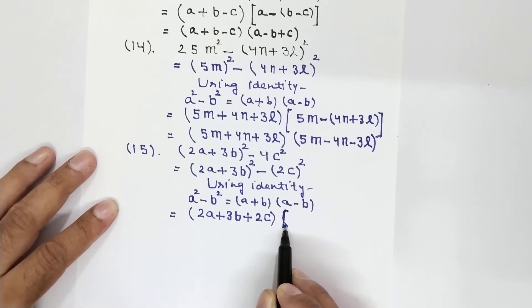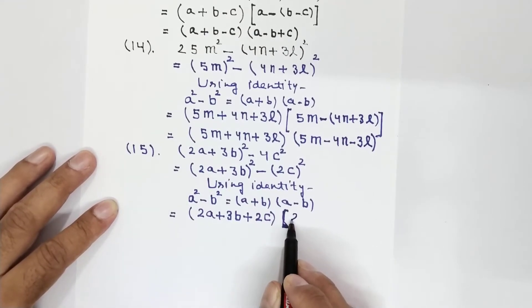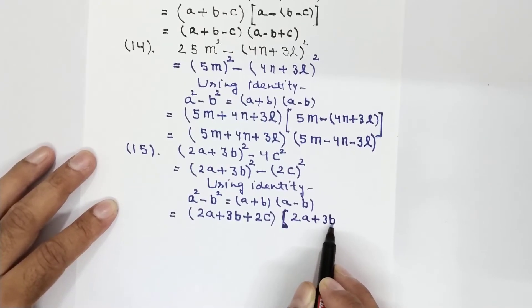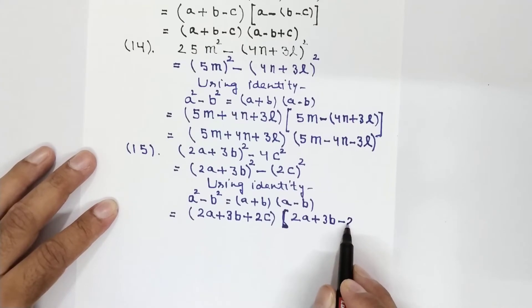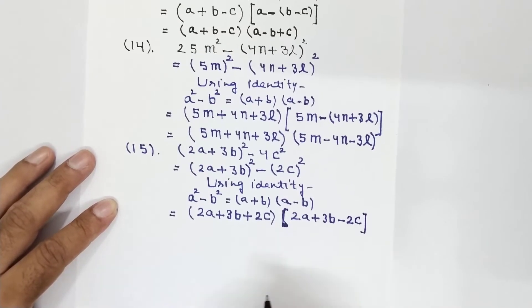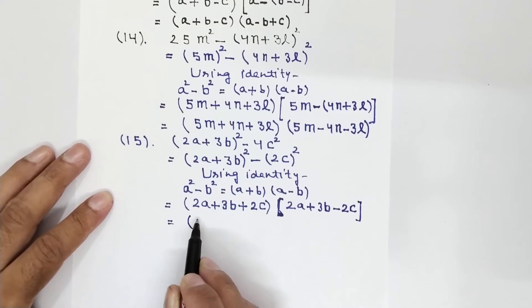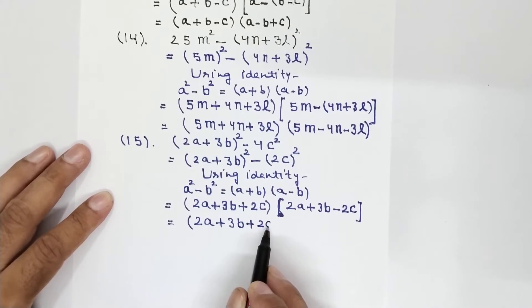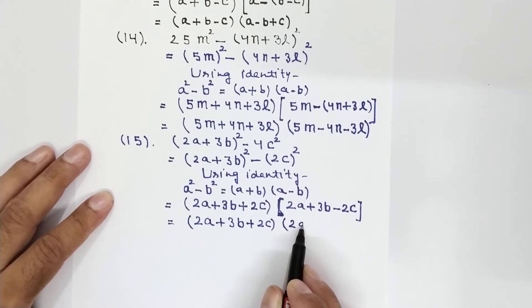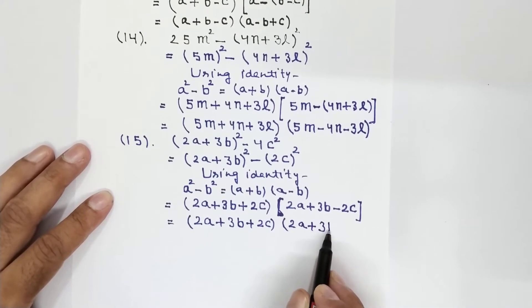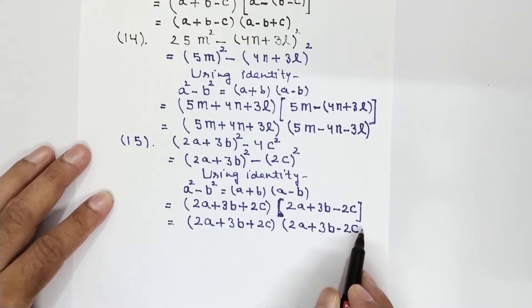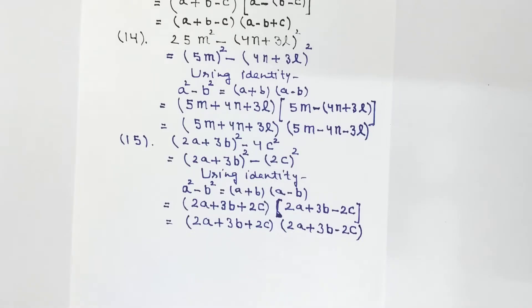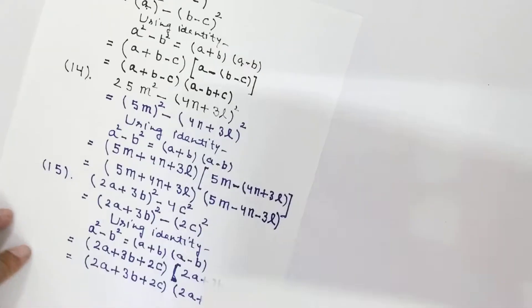So it equals (a plus b) into (a minus b): that is (2a plus 3b plus 2c) into (2a plus 3b minus 2c). This is exactly the same step as written above — just the bracket is removed and small brackets are used. So this was question number 15. Now question number 16 is a double question and a very important question, so watch carefully.